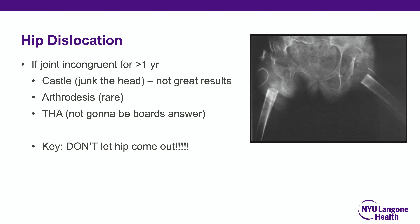If the joint is incongruent for greater than a year with significant femoral head damage, one might consider the CASEL procedure — essentially resecting the femoral head. Results are poor due to proximal migration, continued pain, and the proximal stump articulating with the acetabulum causing bone-on-bone pain with a high revision rate. Arthrodesis is difficult in spastic patients. Total hip replacements are increasingly used, though this is likely not the boards answer. The key is to prevent the hips from dislocating in the first place.